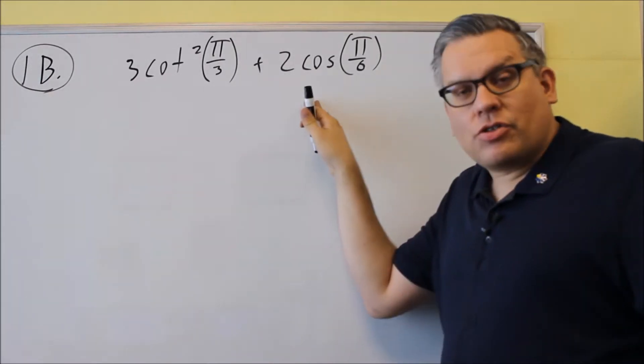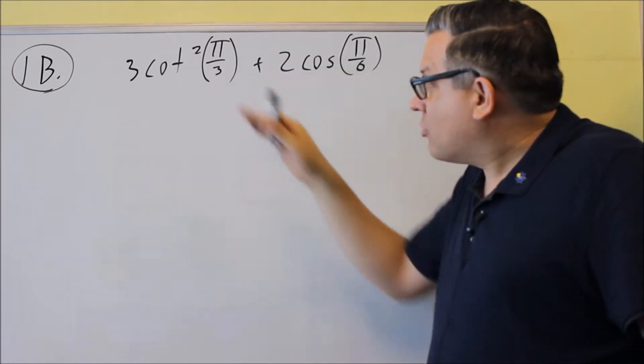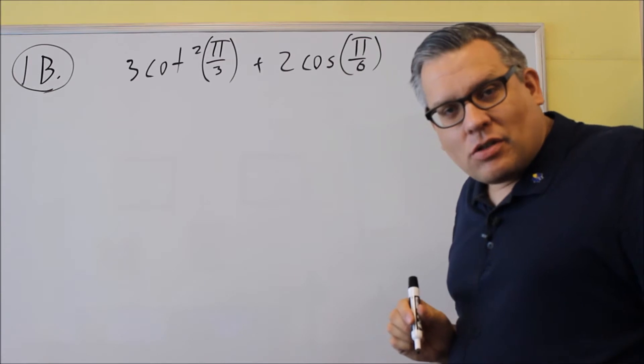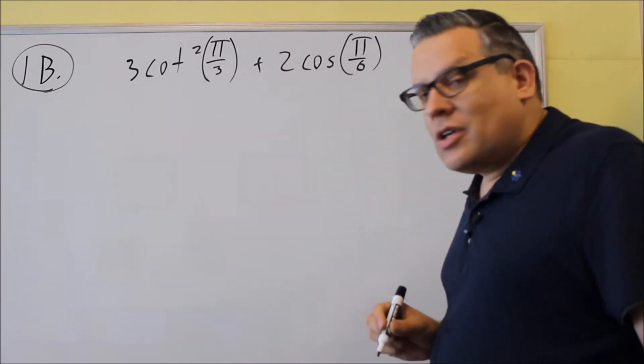So otherwise we're going to go ahead and do this problem. Now as I mentioned in number 1, you want to make sure you know identities and also values from the unit circle and that's basically what this problem is going to be testing.